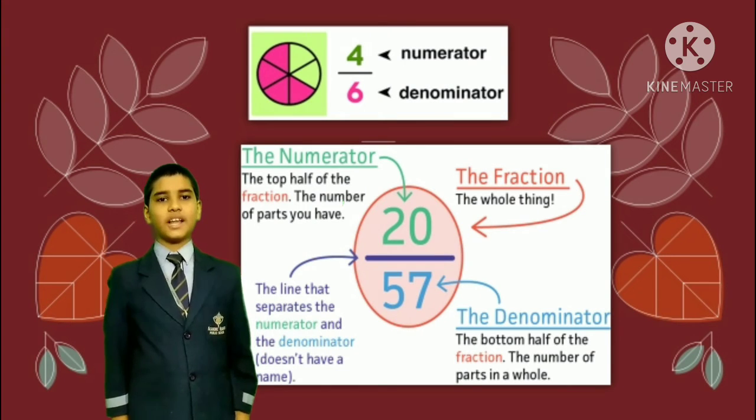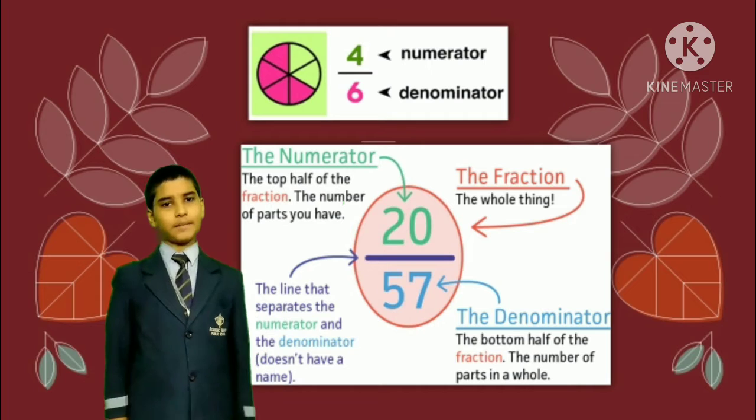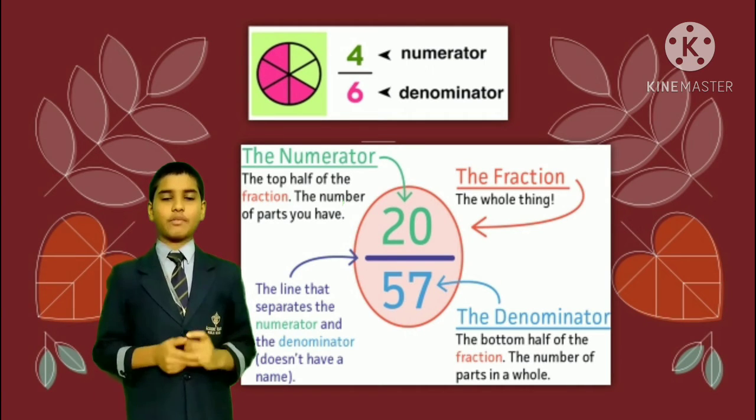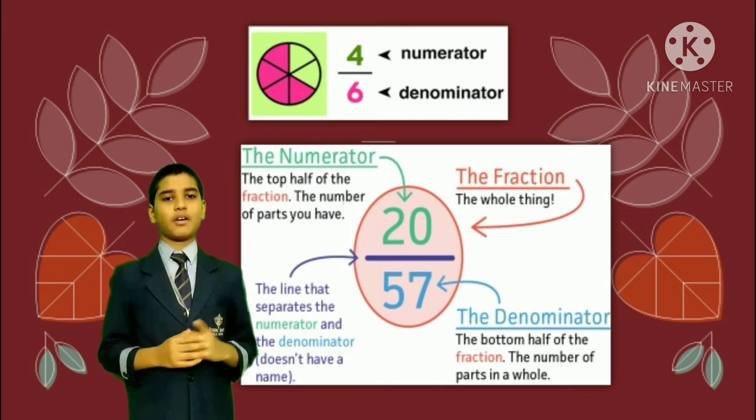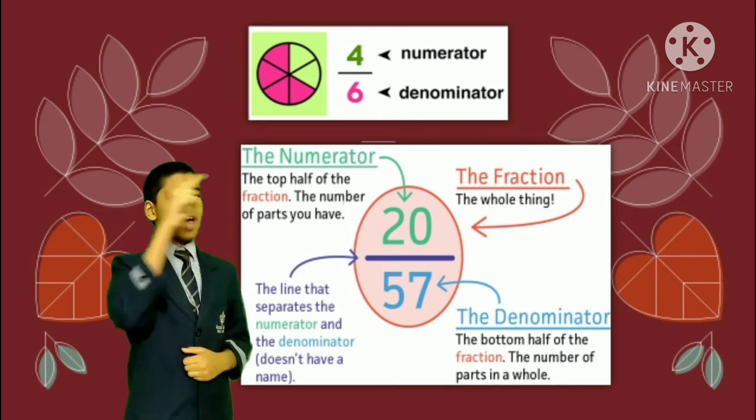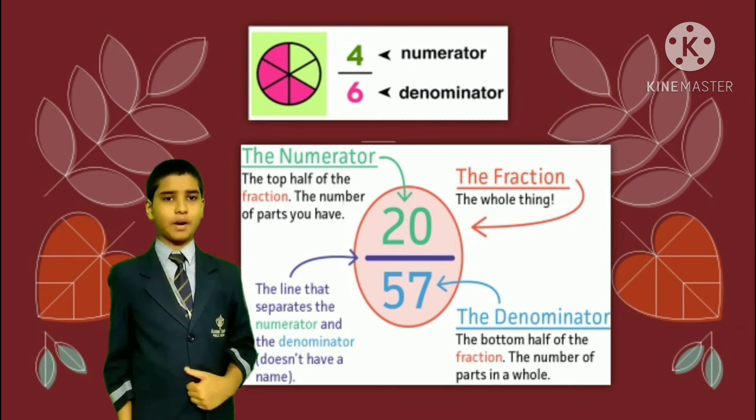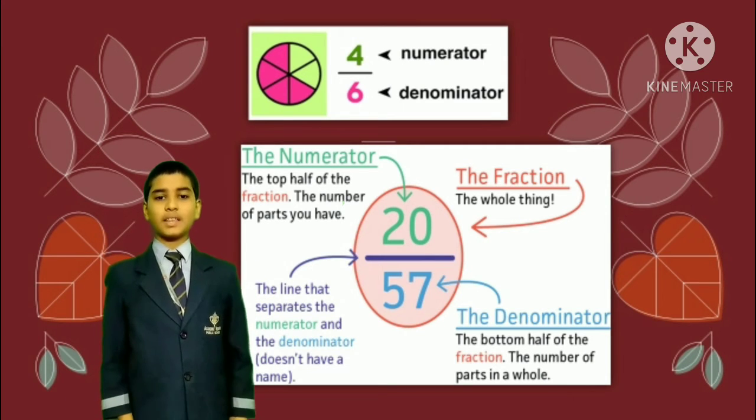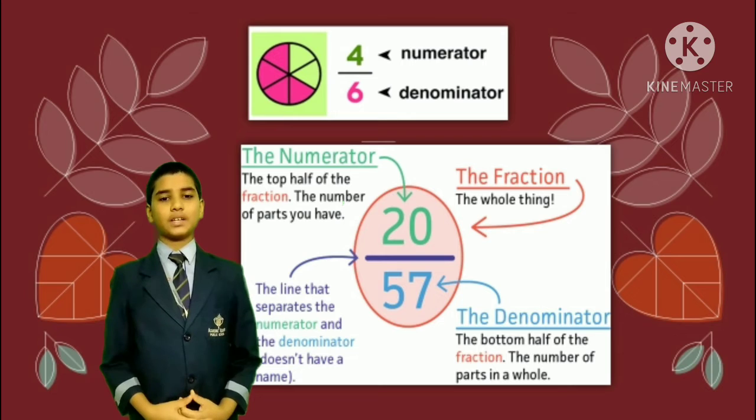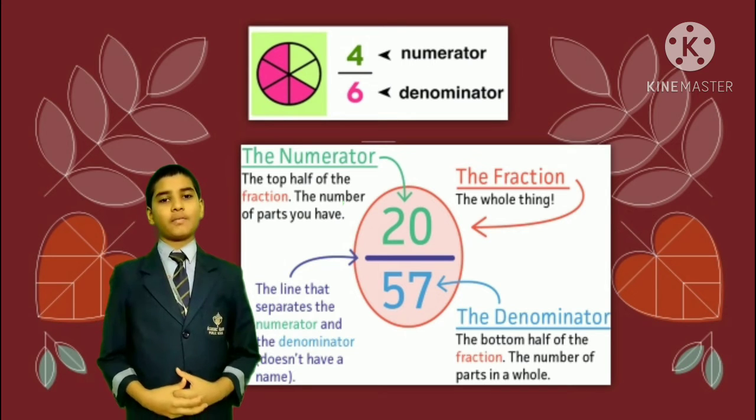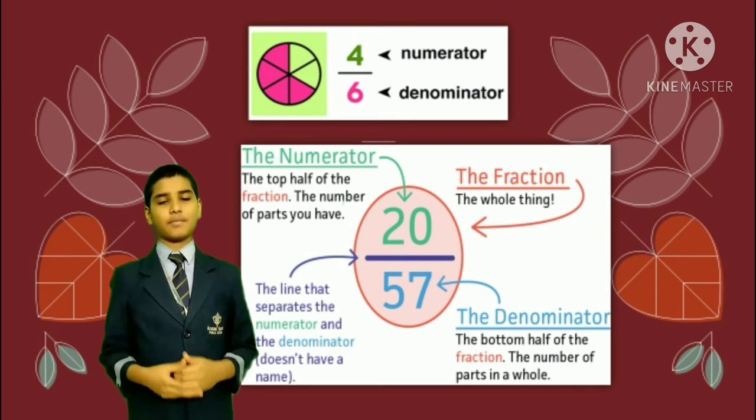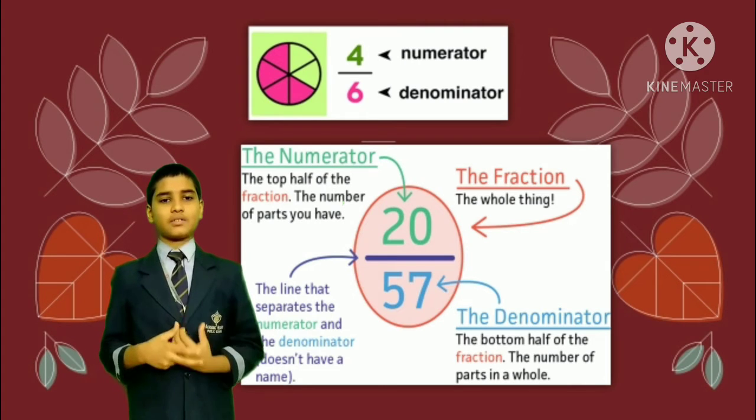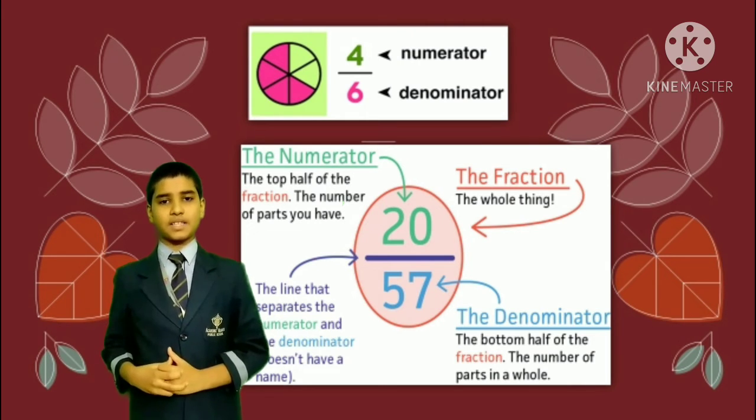A fraction has two parts, namely numerator and denominator. Numerator is the number on the top of the fraction and denominator is the number at the bottom of the fraction. The numerator defines the total number of parts taken from the whole and denominator defines the total number of equal parts in a whole.